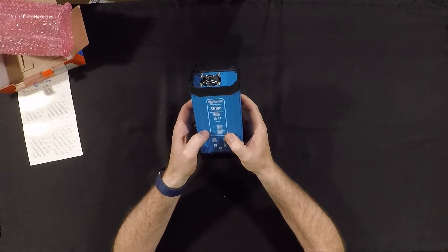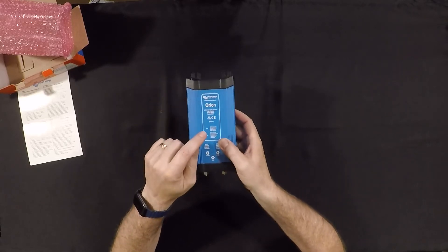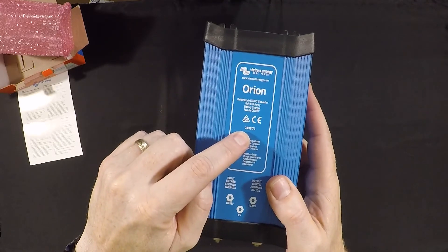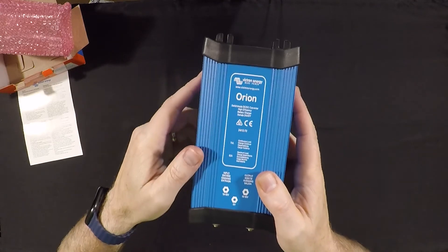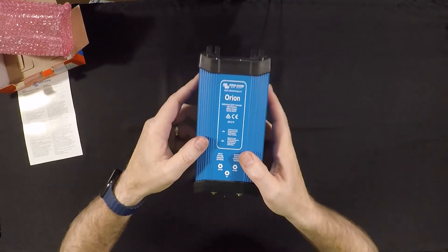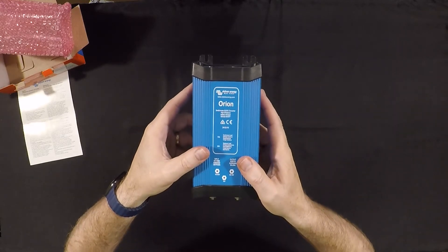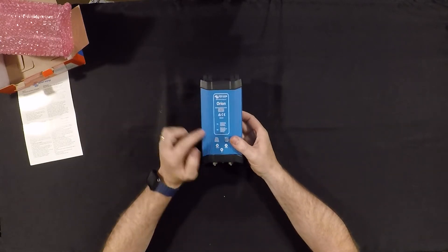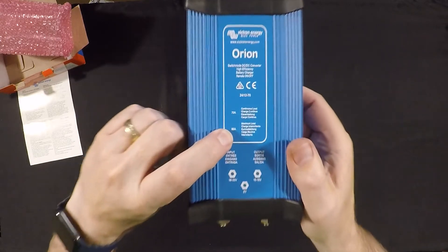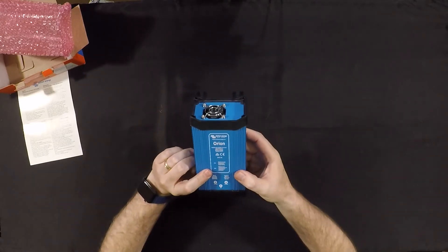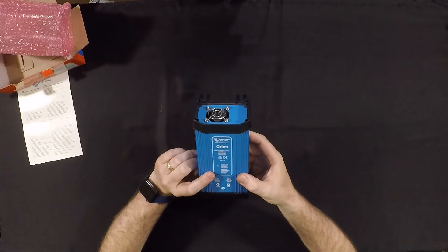You can see right there, 24/12-70. It goes from 24 volts down to 12 volts and it will supply up to 70 amps continuous load, although it does say here that it can also do 85 amps maximum peak loads for a certain amount of time.